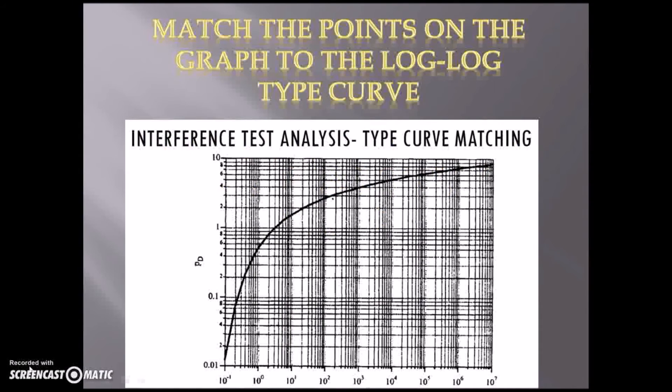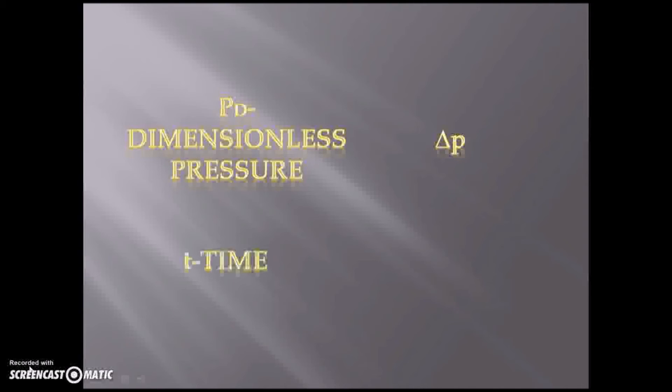For the third step, we can now match the points on the graph to the log-log type curve. This is an example of the interference test analysis type curve matching. Next, after the points are matched, we will be able to obtain match points from both of graphs, which are PD, dimensionless pressure, delta P, delta T, and lastly, dimensionless time over dimensionless radius square.